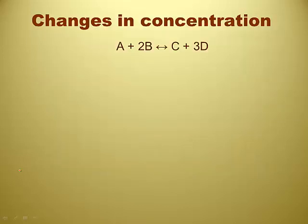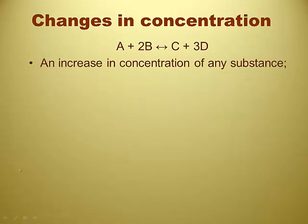Concentrations first. So we start with this hypothetical reaction that has A and B as reactants and C and D as products, with molar ratios written down. An increase in concentration of any substance is going to shift away from that increase. So if I added more B, the reaction is going to have lots of extra B, so it's going to try and make C and D — shift to the right. But if I added a lot more C, the reaction is going to want to get rid of that C, so it's going to shift to the left.